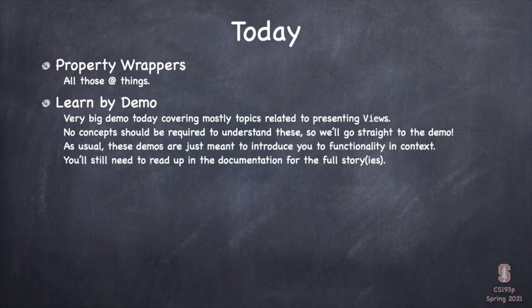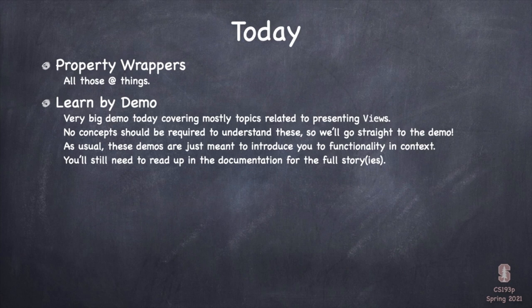Today we're going to have some slides where we'll talk about property wrappers — all those at-sign things: @State, @ObservedObject, all those things. Then we're going to have a very big demo which will use a lot of those at-sign things, but also cover a lot of new concepts you'll get from seeing the code. As usual in the demos, I'm just going to be scratching the surface. You're mostly going to learn by doing in your homework and final project, and also by checking out the documentation.